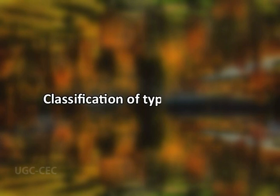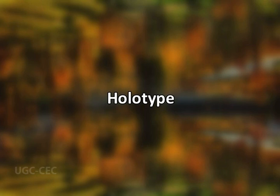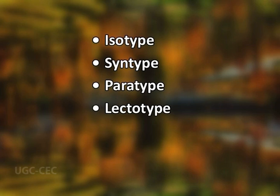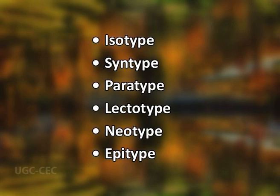Now we will discuss the classification of type specimens. The International Code of Botanical Nomenclature recognizes several kinds of nomenclatural types, the most important of which is the holotype. The other types are isotype, syntype, paratype, lectotype, neotype, and epitype.